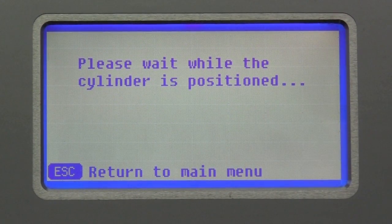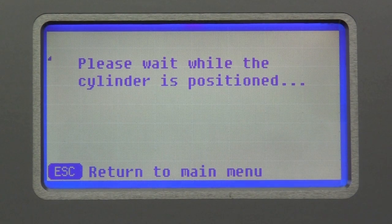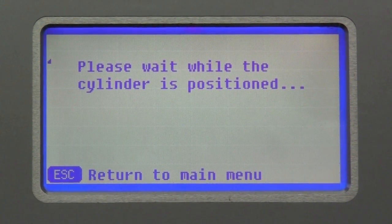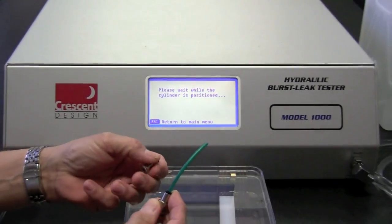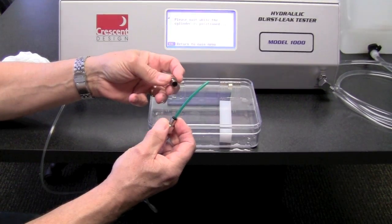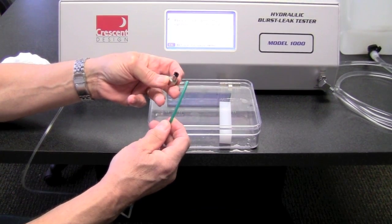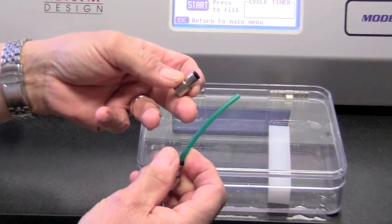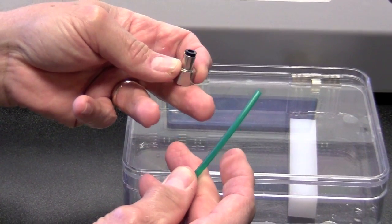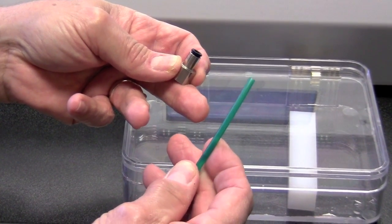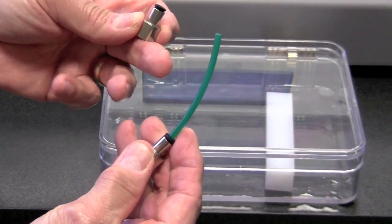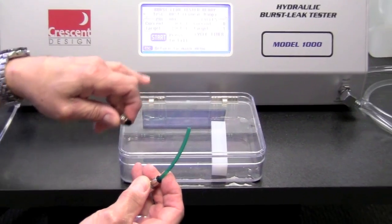The machine is now setting itself, getting ready to do the test. First, it will do a fill. And what I have here is a green plastic tube commonly used for compressed air in industrial applications. And I'm using this as an example of doing a burst. It could be any number of different things. So the first thing we need to do is get the air out of the tube. And we use the fill function on that.